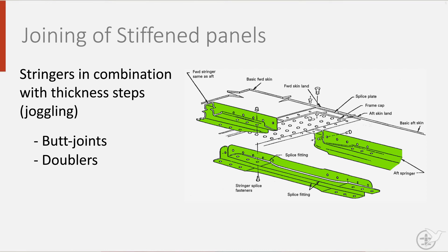A fuselage is rarely made out of one piece, but at the same time we want the longitudinal stringers to be as undisturbed as possible. So what tends to happen is that stiffened panels are joined together, and at that same time the stringers are joined together. As you can see in the figure, the skin is joined on the inside by a splice plate. The stringers are joggled to allow for the splice plate, and the stringers are attached to each other using a stringer splice.